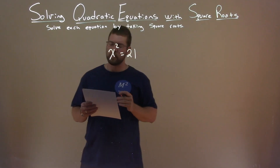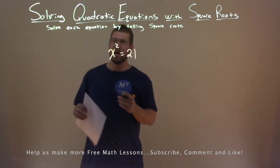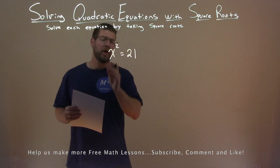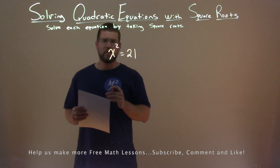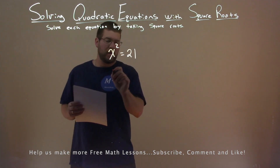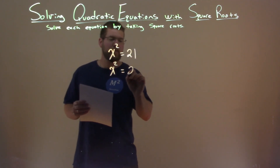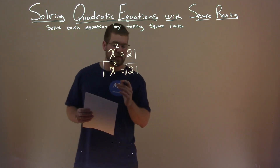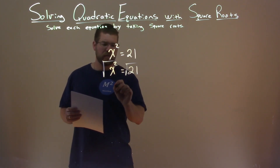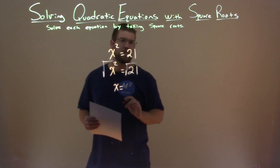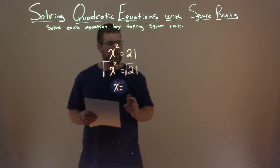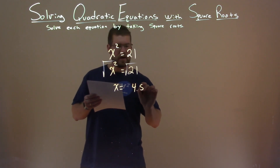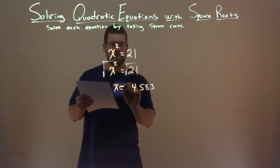We're given this problem here: x squared equals 21, and we want to solve this equation by taking the square root. Our x variable is already by itself, so the opposite of squaring is the square root. I'm going to take the square root of both sides, which cancels out x squared, leaving x by itself. The square root of 21 is approximately 4.583.